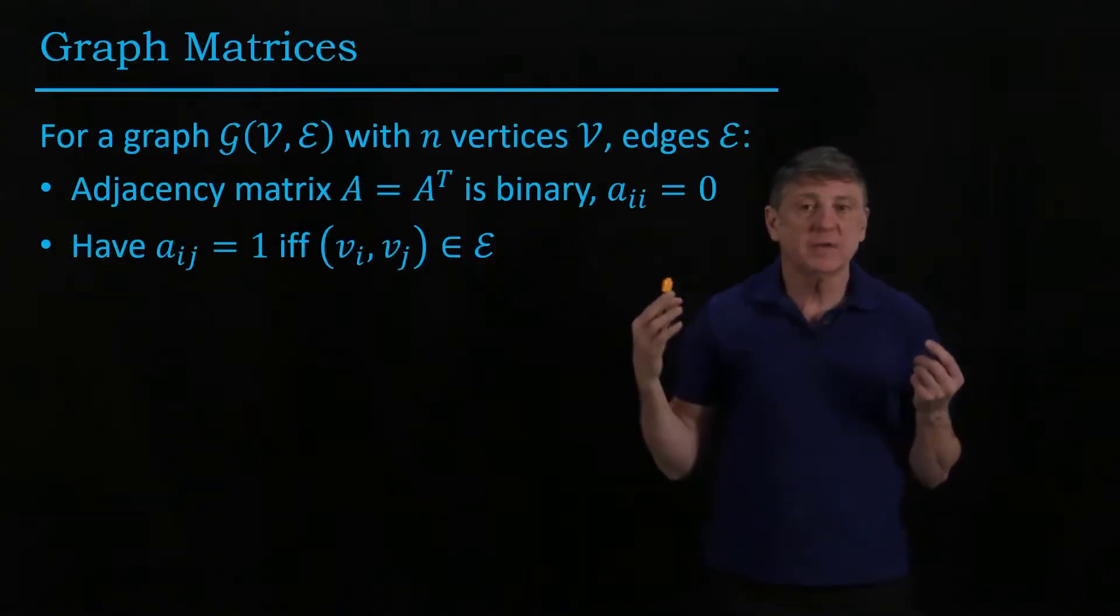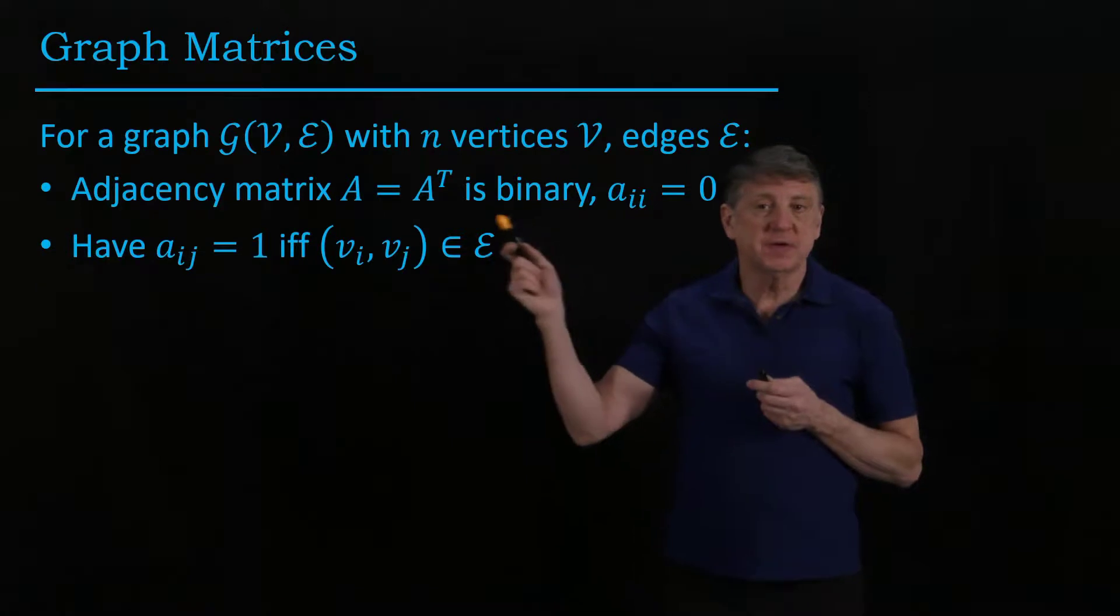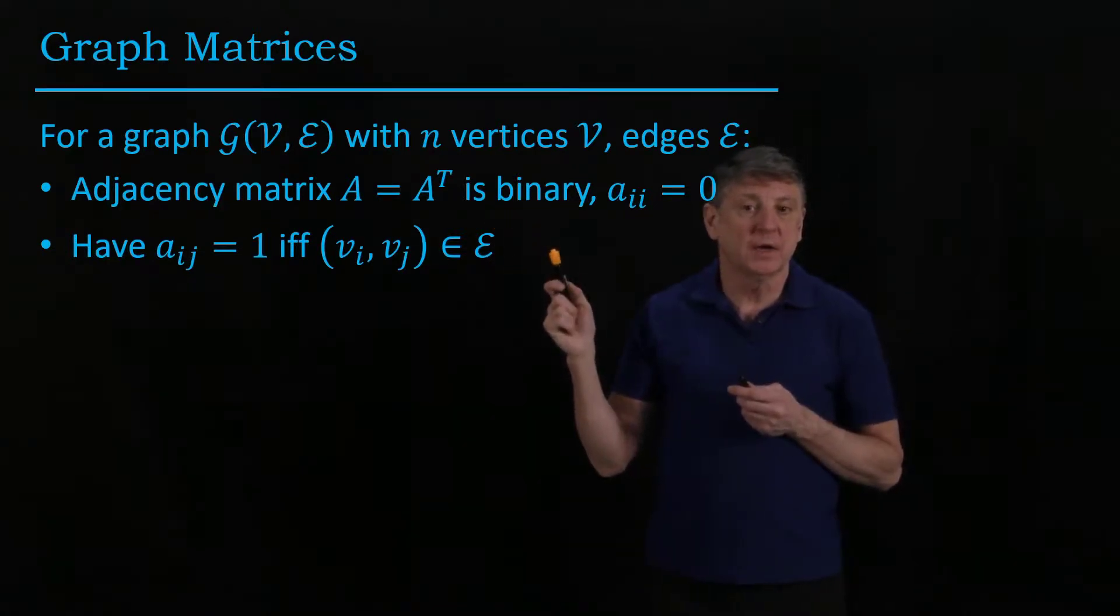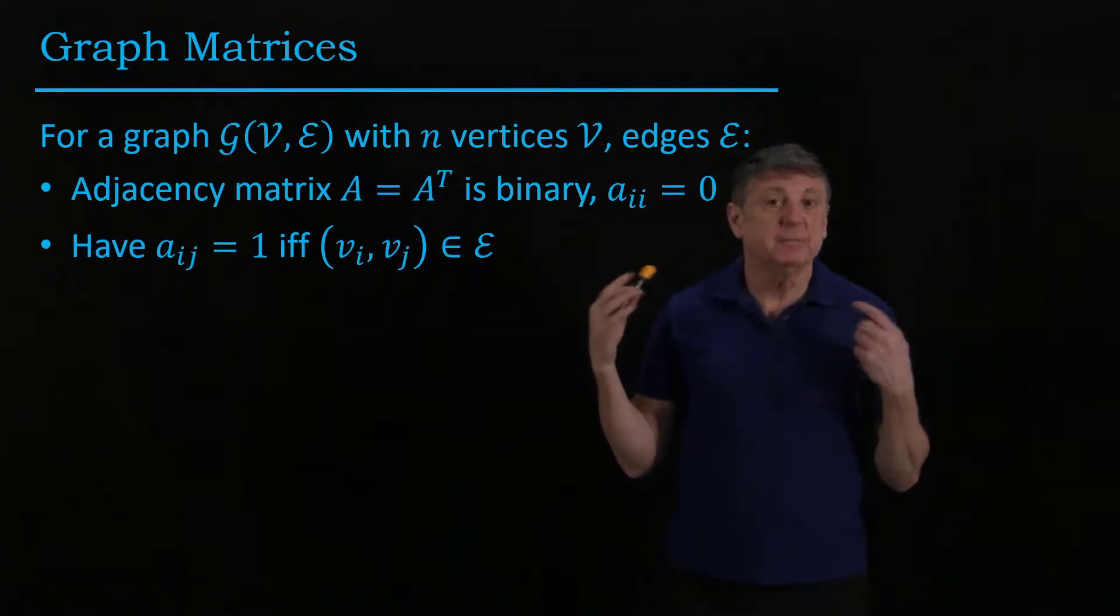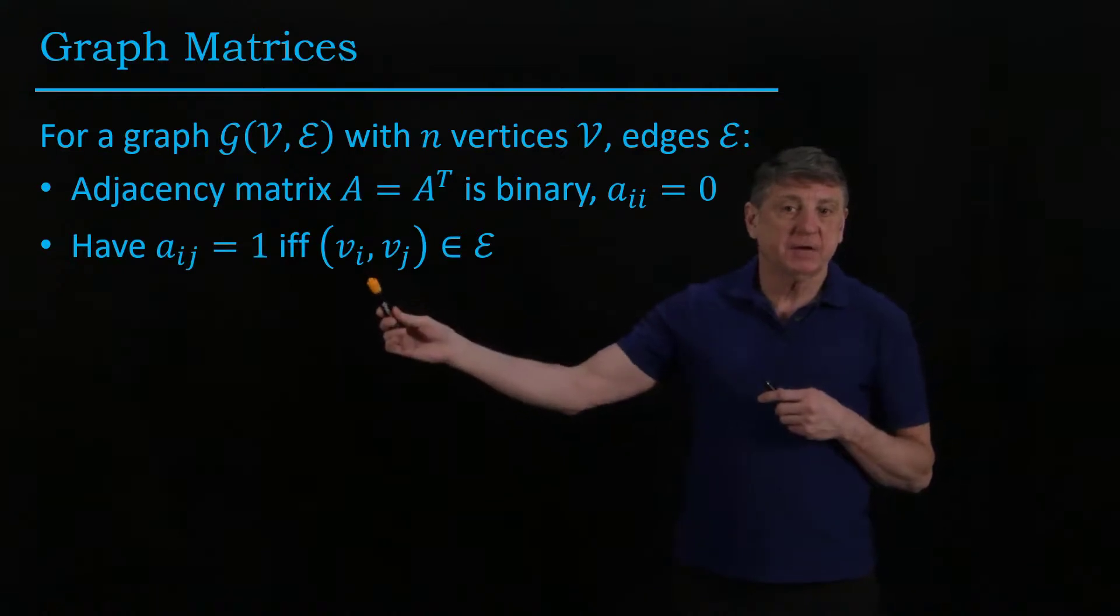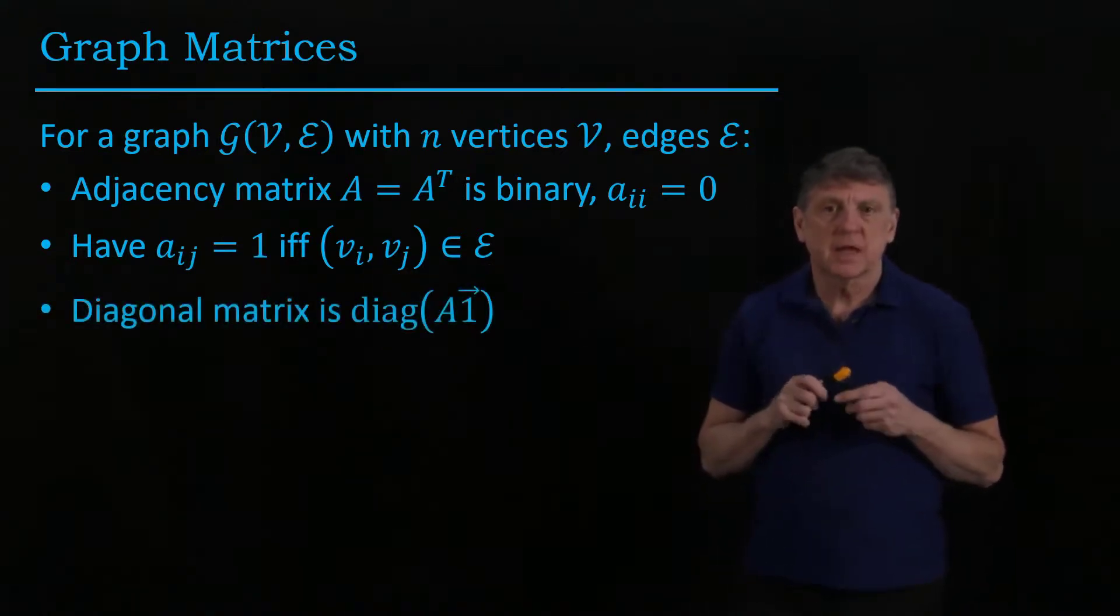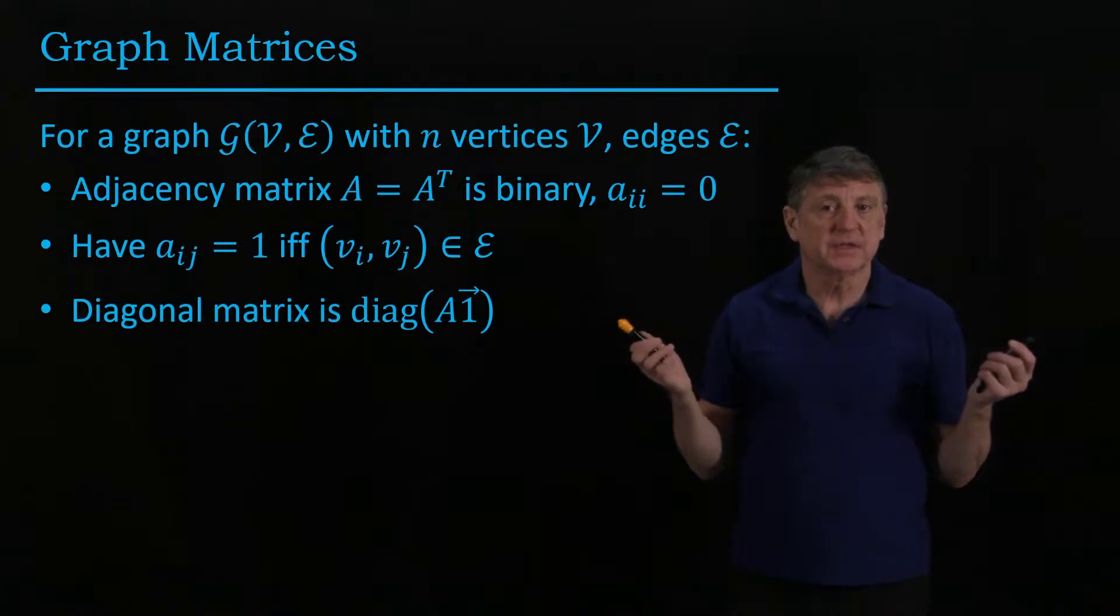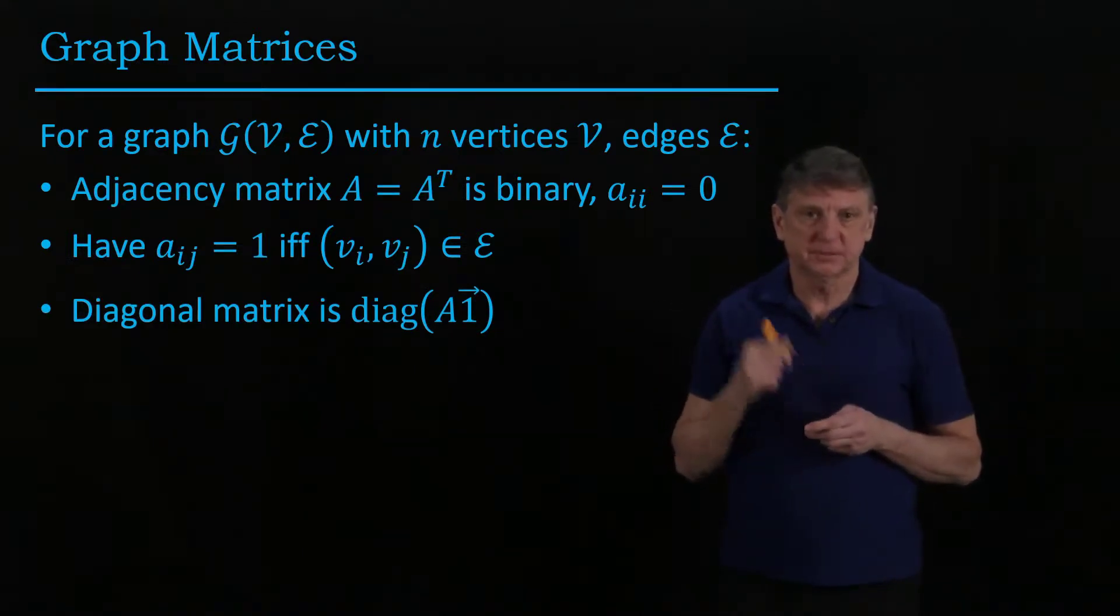And our requirement is that an entry of the adjacency matrix is one, if and only if it means that that pair of vertices are an edge. And let's recall that that, this doesn't work.